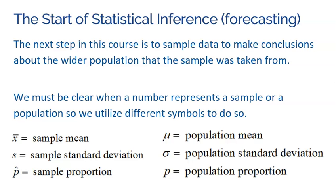Now, all of this leads us to the start of statistical inference, which is also known as forecasting. Forecasting is this idea that we don't know what the future is going to be, but we're trying to make a prediction about it. And what we could do is take the information from a sample, and we could use that information to make conclusions about the wider population that the sample was taken from.